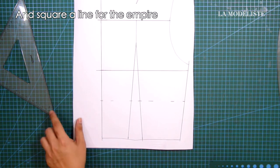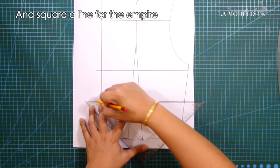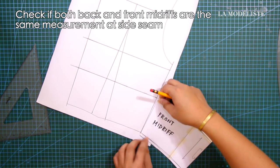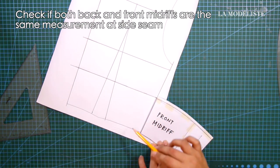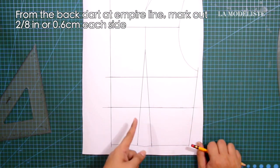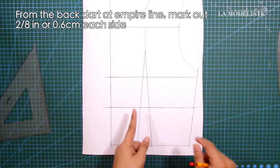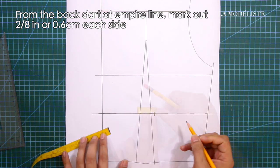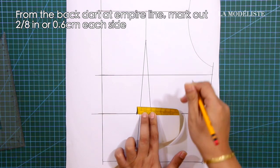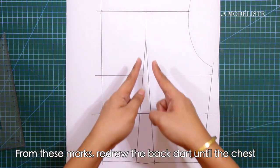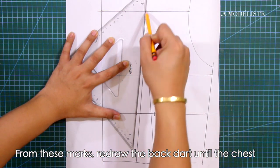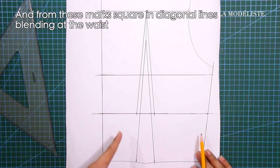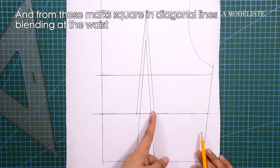And square a line for the empire. By the way, check if both back and front midriffs are the same in measurement at the side seam. From the back dart at empire line, mark out 2/8 of an inch or 0.6 centimeter each side. From these marks, redraw the back dart until the chest line. And from these marks, square in diagonal lines blending at the waist.